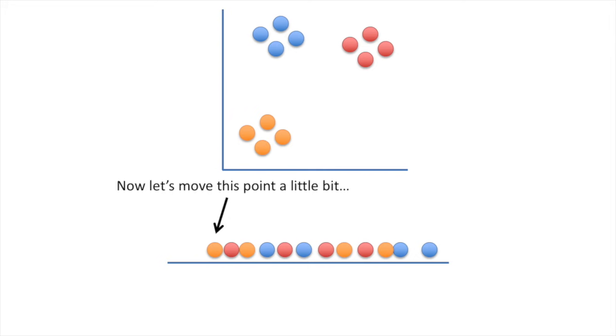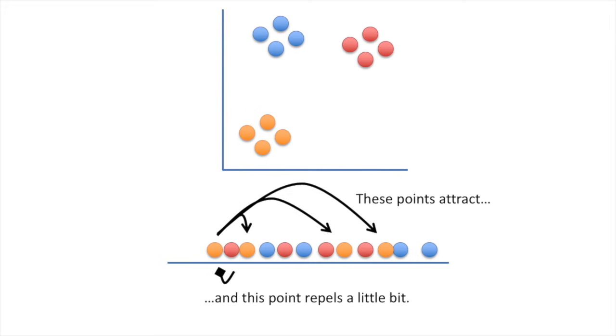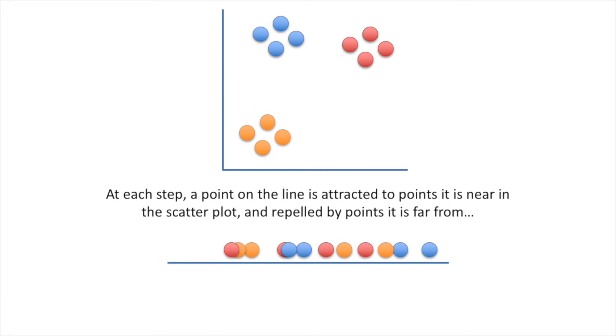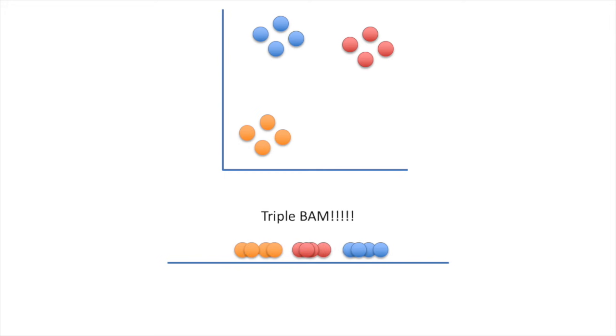Now let's move this point a little bit. These points attract, because they are close to each other in the two-dimensional scatterplot. And this point repels a little bit, because it is far from the point in the two-dimensional scatterplot. So it moves a little closer to the other orange points. Double Bam! At each step, a point on the line is attracted to points it is near in the scatterplot, and repelled by points it is far from. Triple Bam!